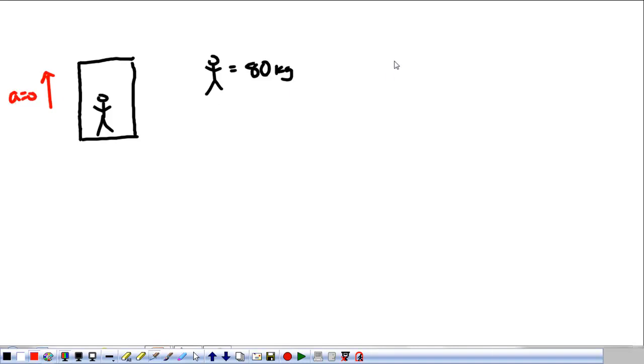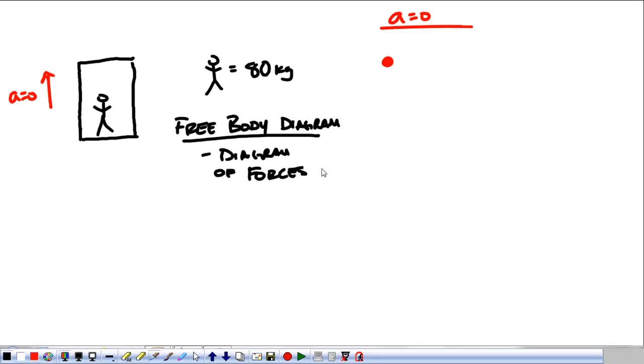I'm going to say that one person is 80 kilograms. What we're going to do is, in the elevator, look at some different things. First off, let's start off with a zero acceleration. So, look what happens with an acceleration that equals zero for the elevator. Let's take our person and draw a free body diagram.